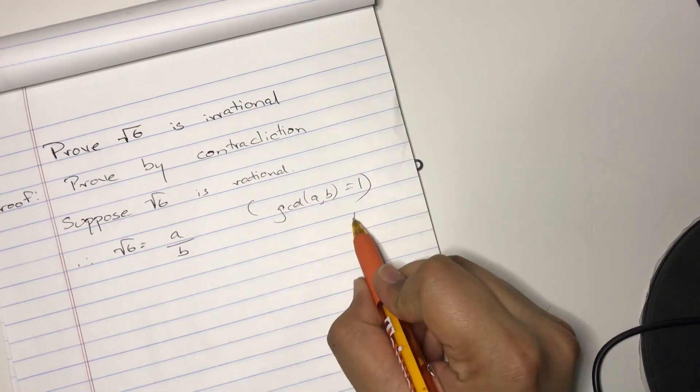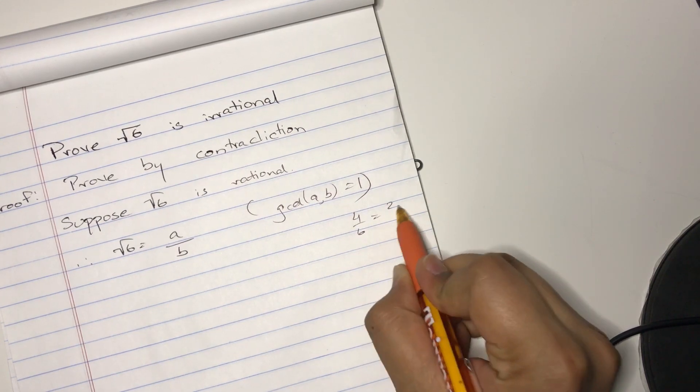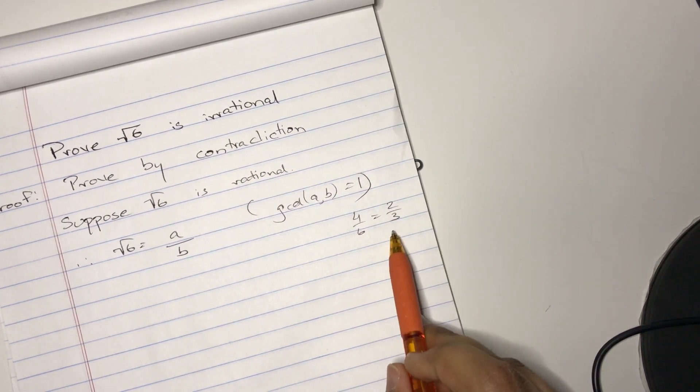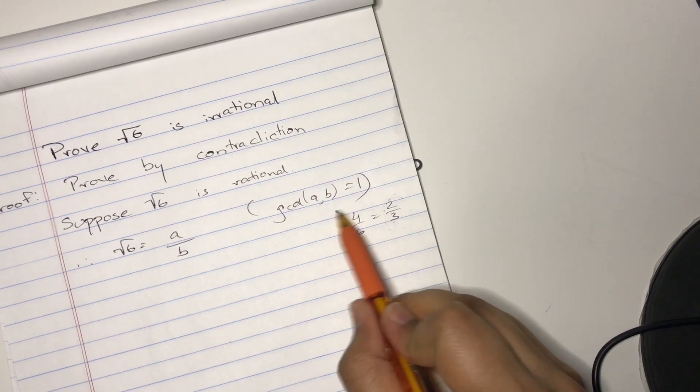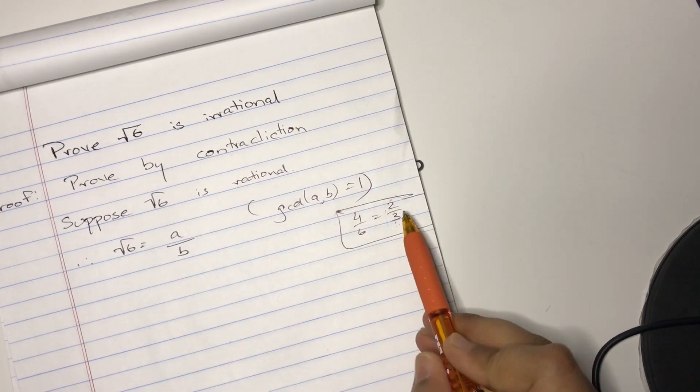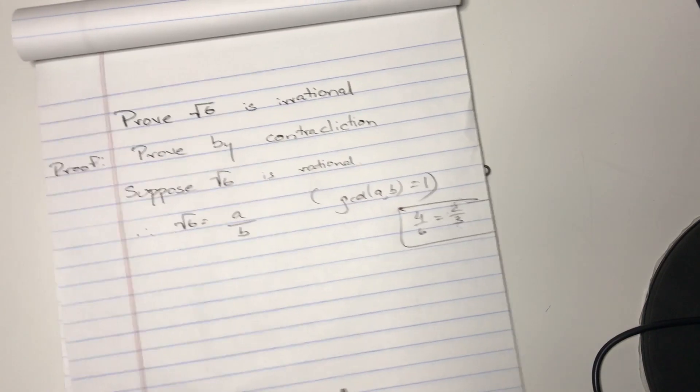I mean, by that I mean if you have like 4 over 6, it could be represented as 2 over 3. We're going to do the base form, where the GCD of these two numbers, the numerator and denominator, is 1.